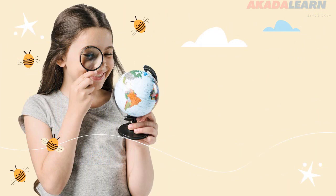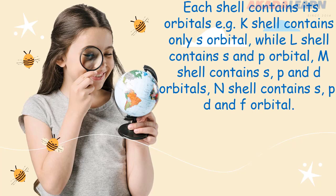So, each shell, depending on its size and nature, contains a certain number of orbitals. For example, the K shell contains only the S orbital, while the L shell contains the S and P orbitals. The M shell, on its own, contains the S, P, and D orbitals, while the N shell contains the S, P, D, and F orbitals.